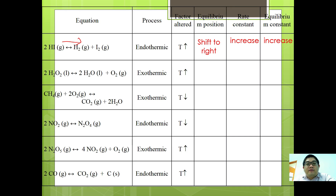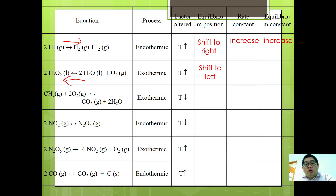For the second example, H2O2 gives H2 plus IO2, the forward reaction is exothermic and temperature increases, so equilibrium will shift backward. Since forward is exothermic and backward is endothermic, equilibrium shifts to the left. As temperature increases, the rate constant increases; however, since equilibrium shifted left, more reactant is formed, so the equilibrium constant decreases.